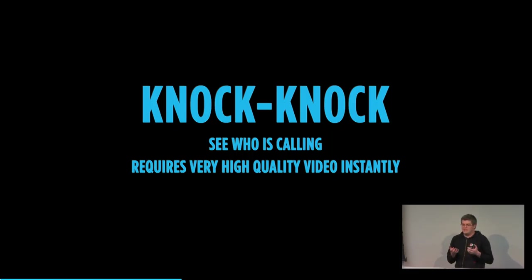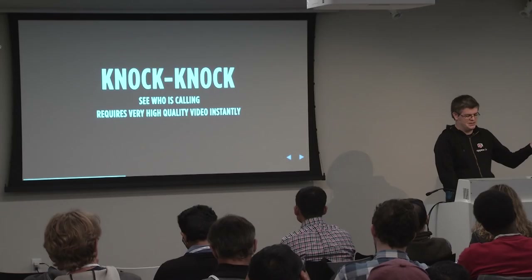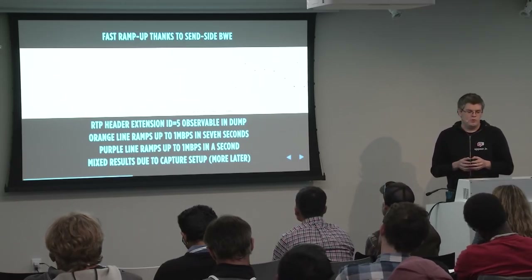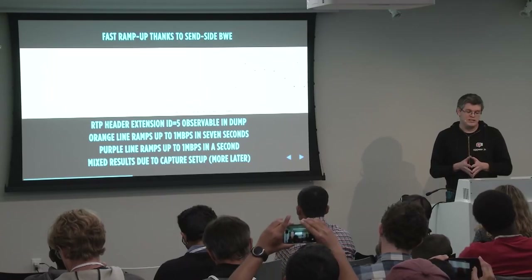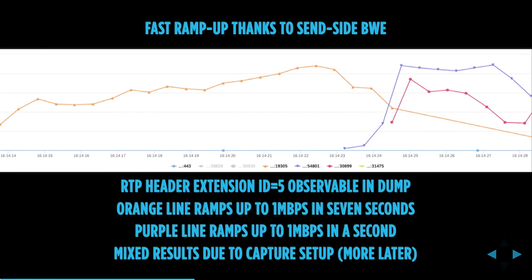Knock Knock is not a really new idea — you see who's calling and can decide whether to accept. It's probably been tried many times but isn't common. Why didn't it work out? I think it requires very high video quality instantly, in the first few seconds, because if you see a blob of pixels, you're not going to accept the call. So what Google did is implement a new way to estimate bandwidth called send-side BWE, visible in RTP packets as a specific RTP header extension with ID 5. The orange line shows the ramp-up to 1 Mbps, which takes about seven seconds.